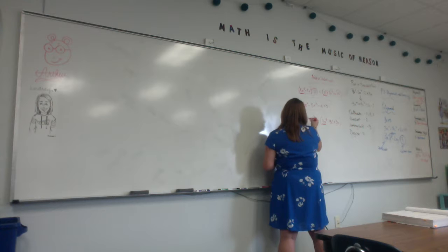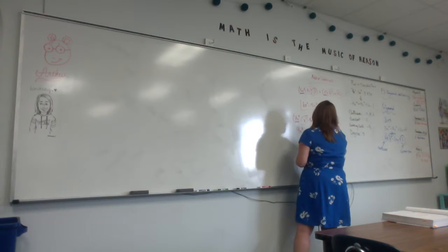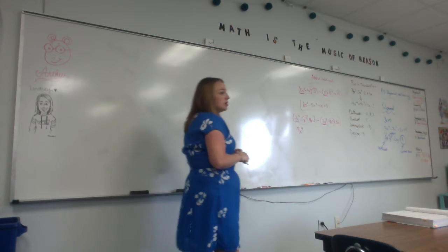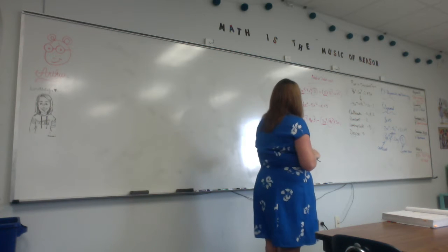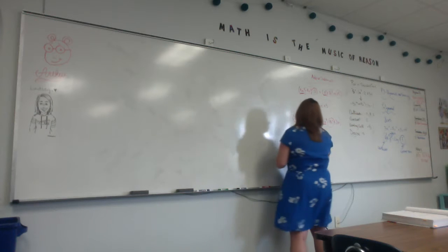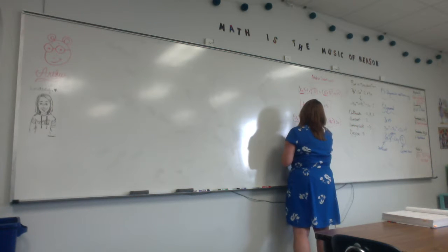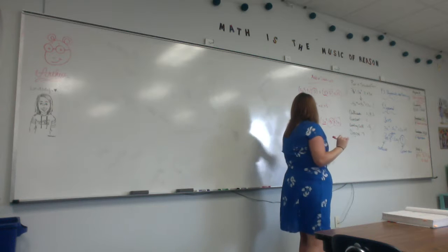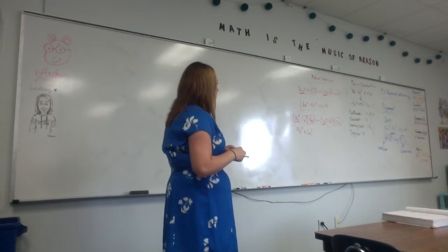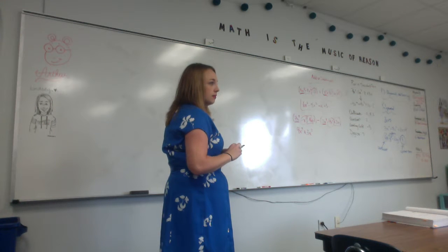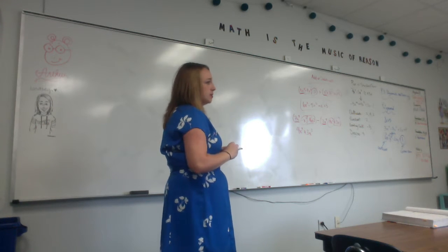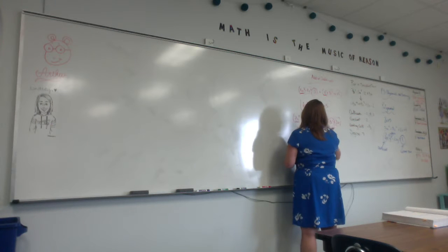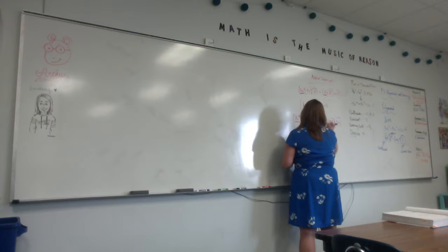I have a negative x squared, and here I have a negative negative 4x squared — so it becomes positive 4x squared. What's negative x squared plus 4x squared? 3x squared. Here I have a negative 4x and a positive 3x, so negative 4x minus positive 3x is negative 7x. And then I'm just left with a 2.